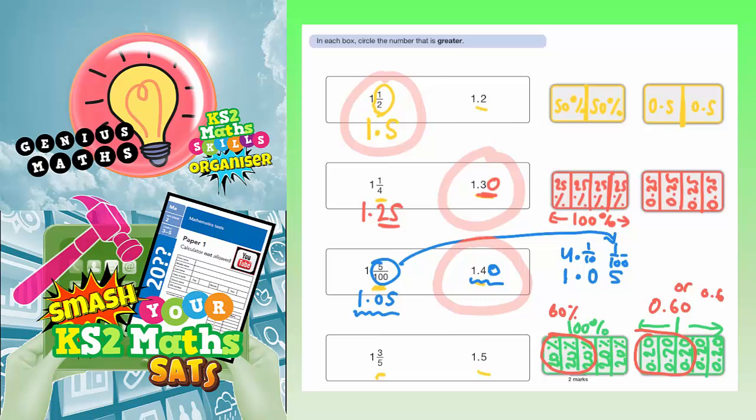So 1 and 3 fifths is 1 whole one, and 3 fifths is the 0.6. So 1 and 3 fifths is 1.6. And obviously, this is bigger than 1.5. So as for the one that we need to circle, 1.6 is bigger than 1.5, so this is the one we need to circle.